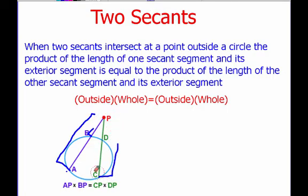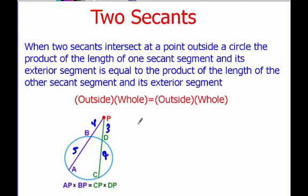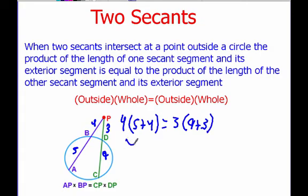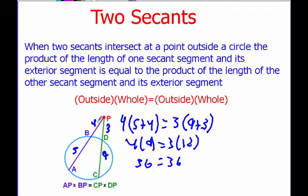An example for this would be: if this was 4, this was 5, this was 3, and this was 9, then we could say — outside, 4, times the whole thing, which is 5 plus 4, equals outside, which is 3, times the whole thing, which is 9 plus 3. Work that out: this is 4 times 9 equals 3 times 12. So whenever we've got two secants crossing, it's the outside times the whole, equals the outside times the whole.